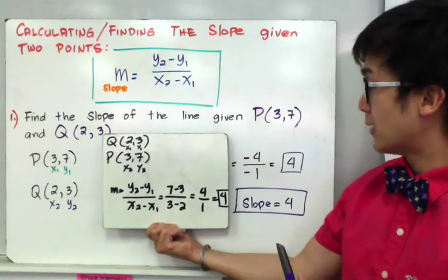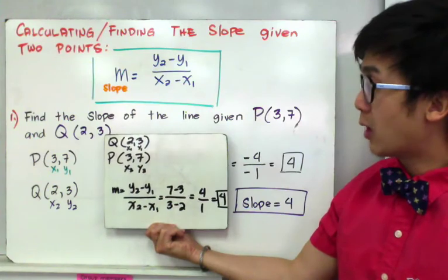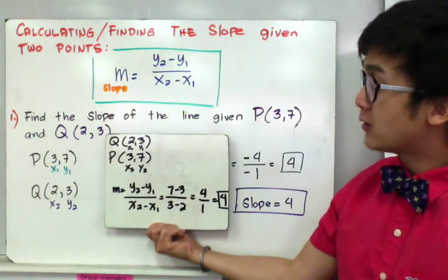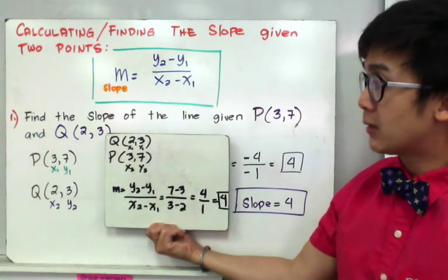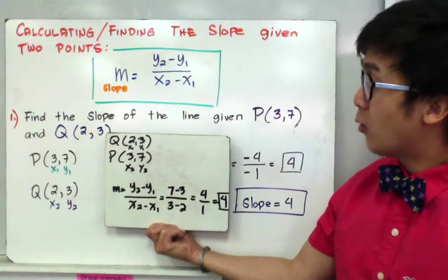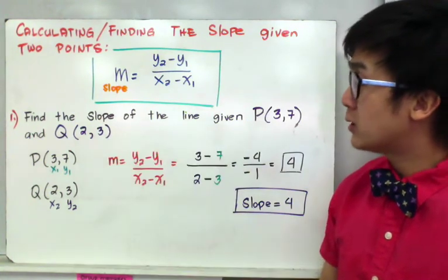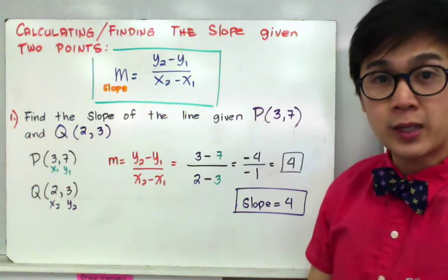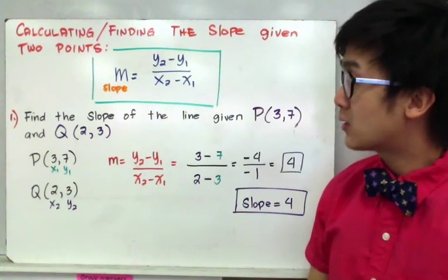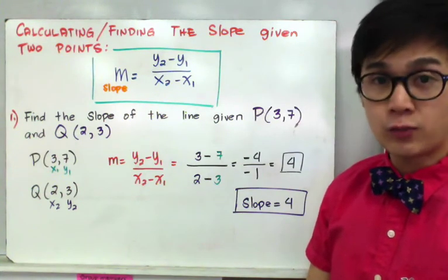which is the same answer as our slope on our original problem. So that means you don't need to worry about switching P and Q or Q and P. The only thing that matters is your position for x's and your y's. So you need to make sure that x and y are correctly labeled in each of your problems.